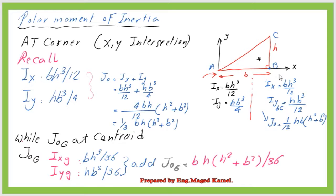If we evaluate the polar moment of inertia at point B, the value will be different from point A. At point B, IX = BH³/12 and IY = HB³/12 — smaller than the IY at point A. Adding these together, the polar moment of inertia at point B equals (1/12)HB multiplied by (H² + B²). Thanks a lot and see you!